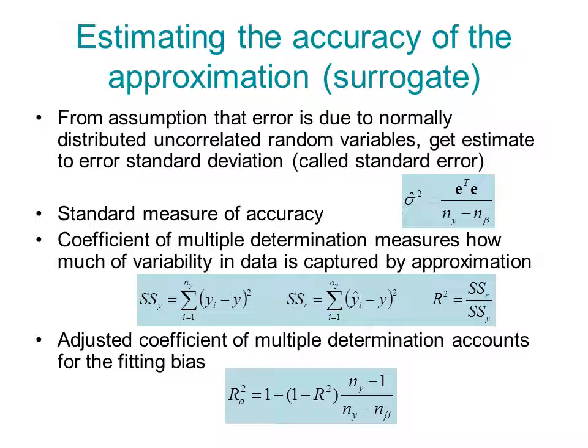So it's essentially an adjusted RMS error. And this is a standard measure of accuracy. Sigma hat will give you an estimate of how much future measurements are going to be different from the surrogate.